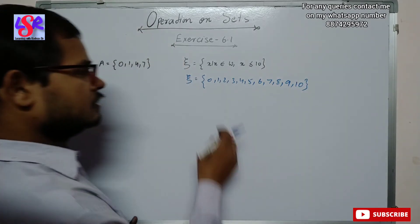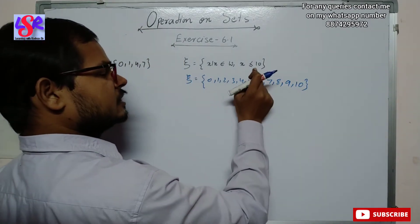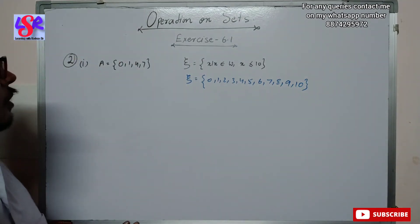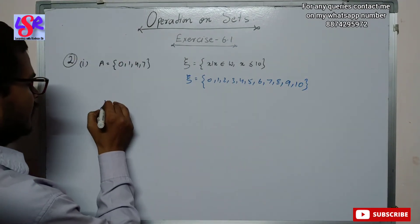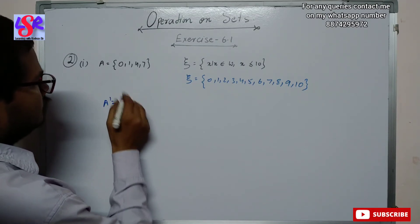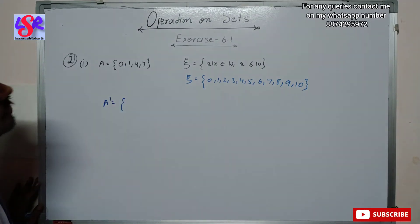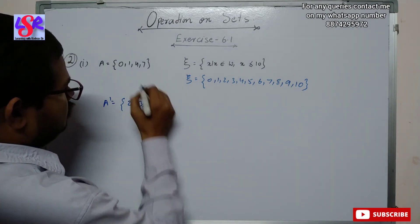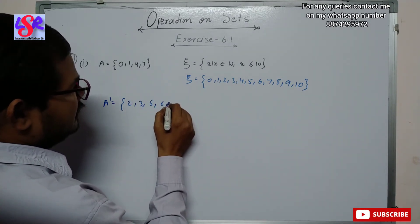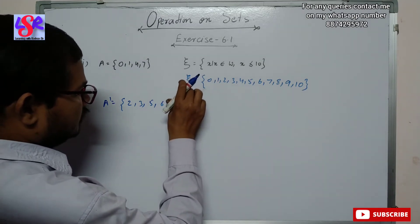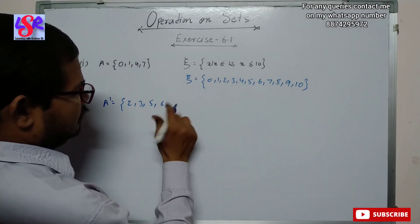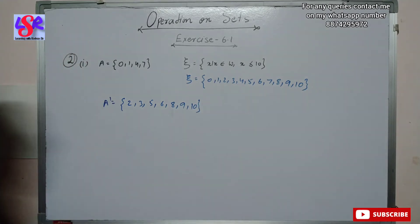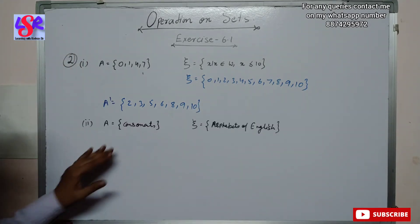Whole numbers start from zero, and we include 10 as well. Now we have to find the complement of A. A complement will be all numbers in the universal set except those in A — that is, except 0, 1, 4, and 7. So A complement = {2, 3, 5, 6, 8, 9, 10}.